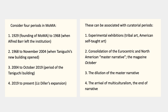Each of these four periods can be associated with different kinds of exhibitions. The first period was very experimental — they were showing tribal art, following Picasso and Braque and other first-generation modernists in that interest, and they were also showing American self-taught art, which was later called outsider art. That was quite an unusual thing to do for a museum of any kind. In the second period, there was a consolidation of the Eurocentric North American master narrative — the canonical story that ended up in textbooks — and that period also included the magazine October, one of the principal vehicles for the scholarship that surrounds the narrative that MoMA exemplifies.